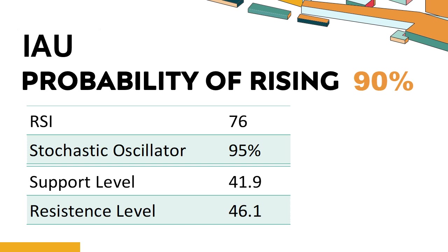IAU's short-term support level is 42.8. If it falls below 42.8 during the session, it will have a chance to test 41.9. IAU's short-term resistance level is 44.9. If it breaks through 44.9 during the session, it will look up to 46.1.